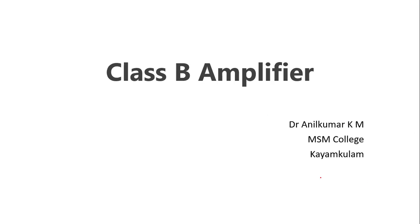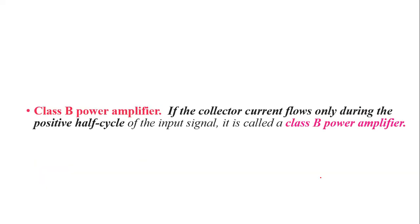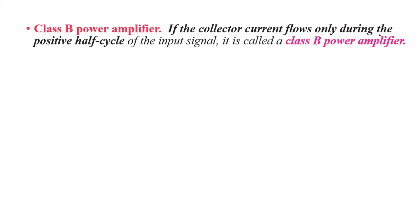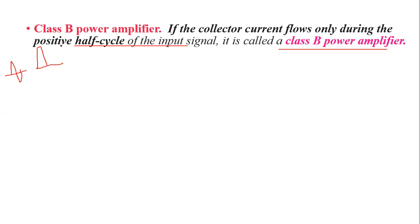Class B power amplifier is defined as one where the collector current flows only during the positive half cycle of the input signal. If you give a signal as input, the output will have only the positive half cycle amplified — the negative part will be missing. Such amplifiers are called Class B power amplifiers. Only half of the signal will be amplified.